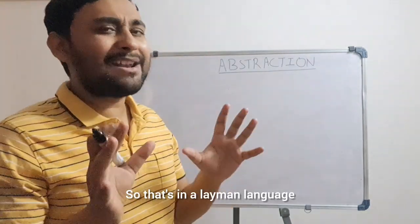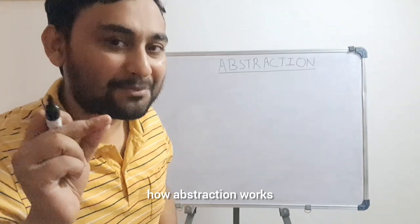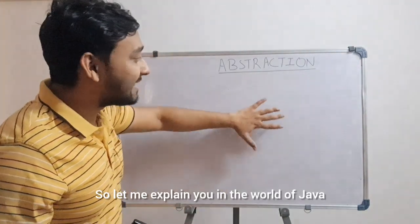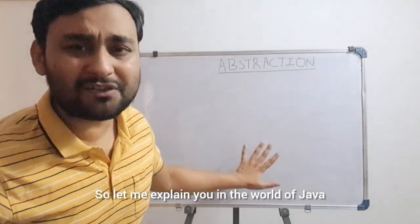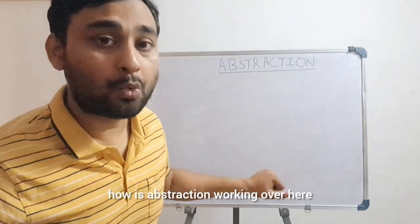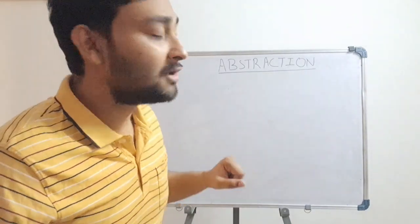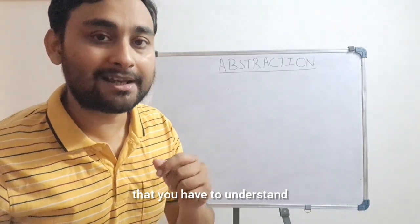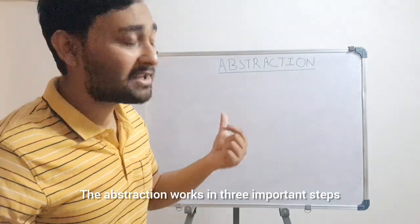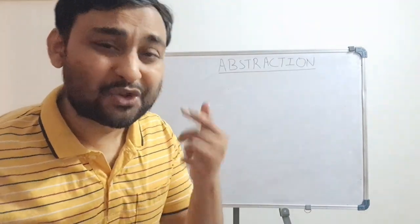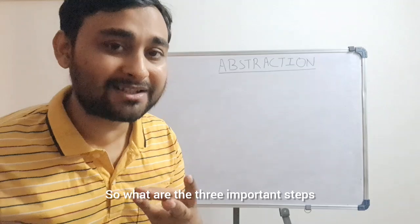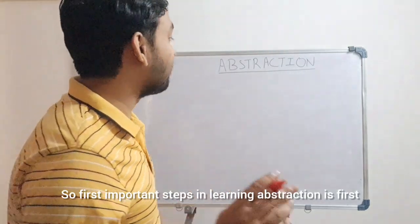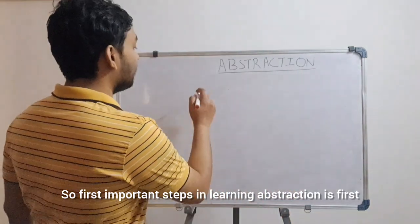That's abstraction in layman's language. Now let me explain how abstraction works in the world of Java. For understanding abstraction, there are three important steps. Let's look at what those three important steps are.